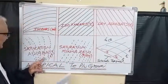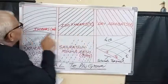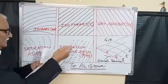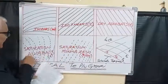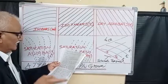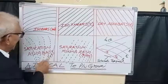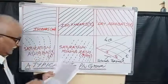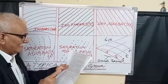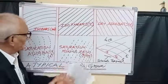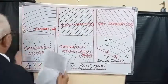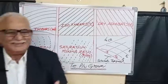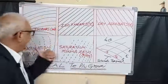Saturation adiabatic lines are lines of constant wet-bulb potential temperature. These are slightly curved lines, starting vertically from the bottom and curving towards the left as they rise.